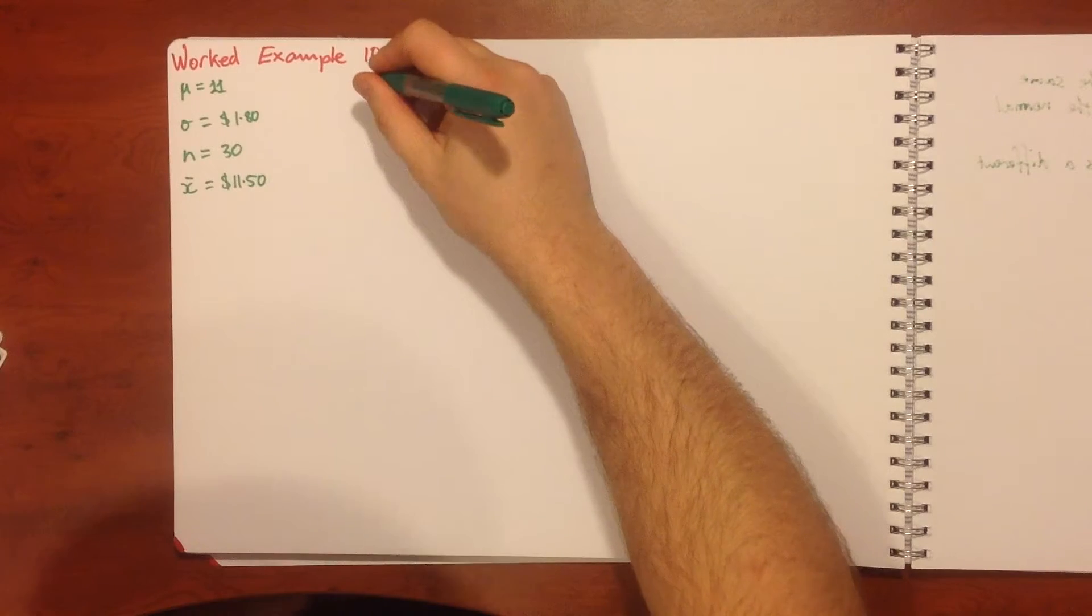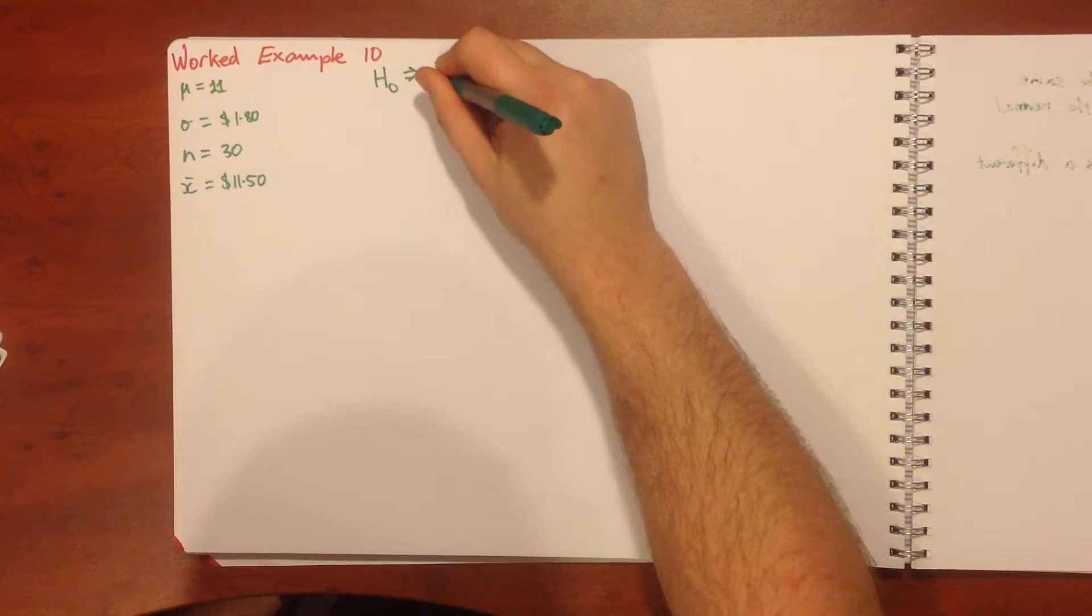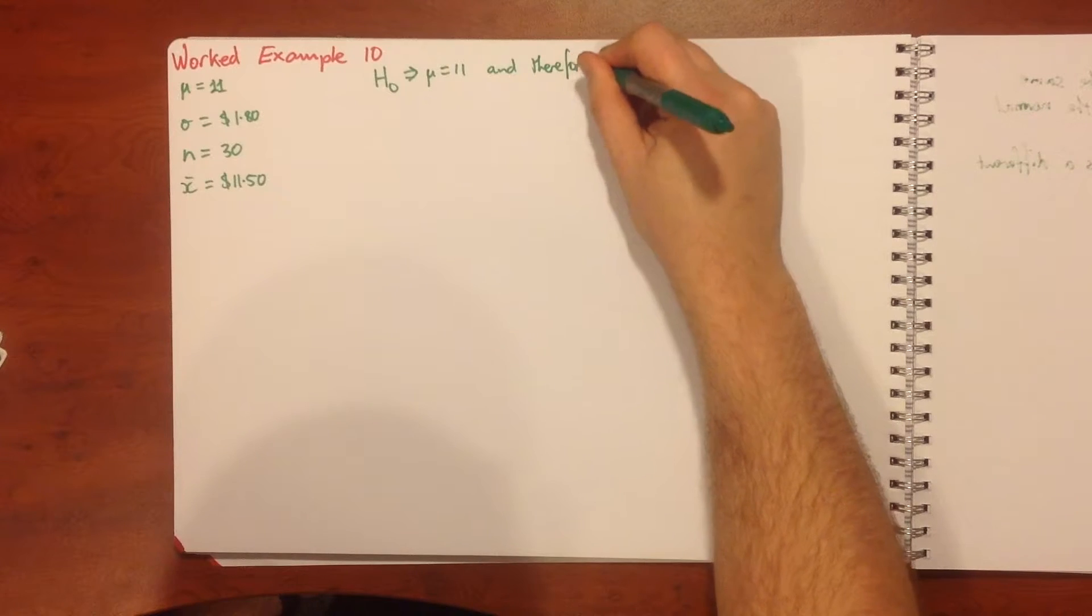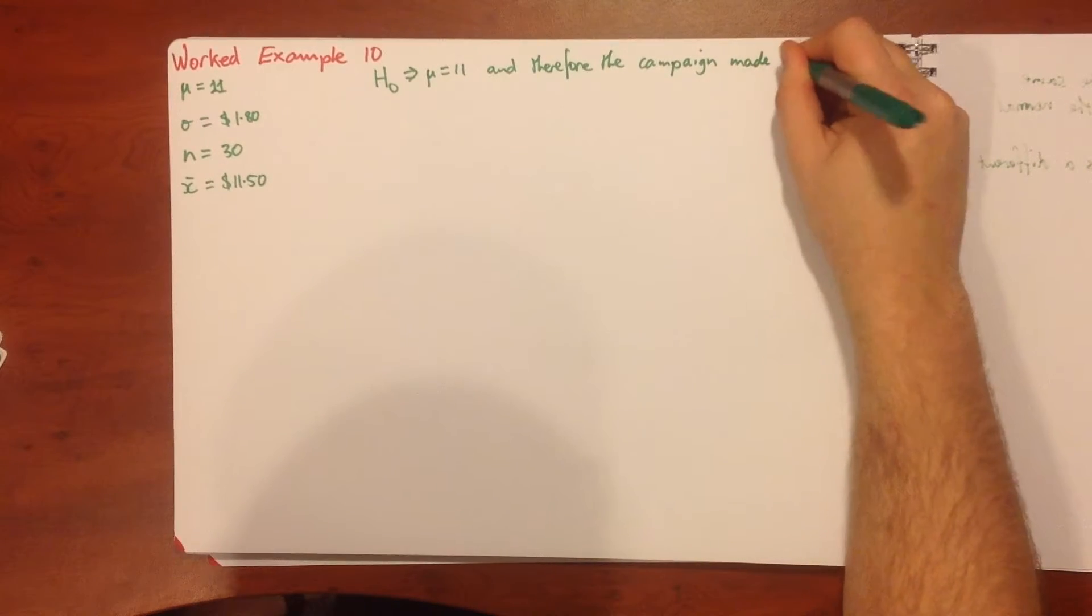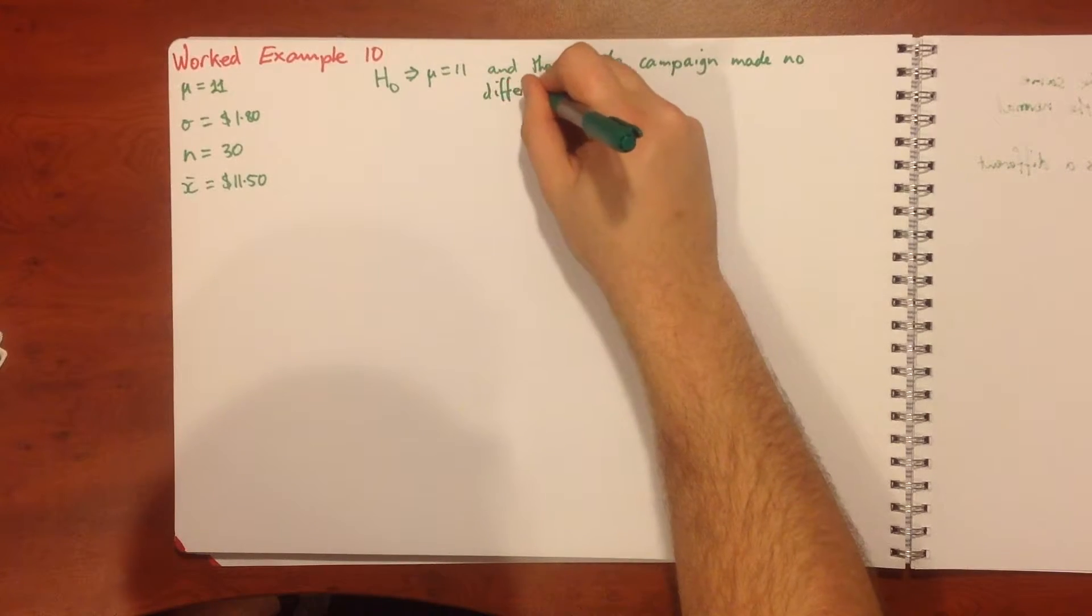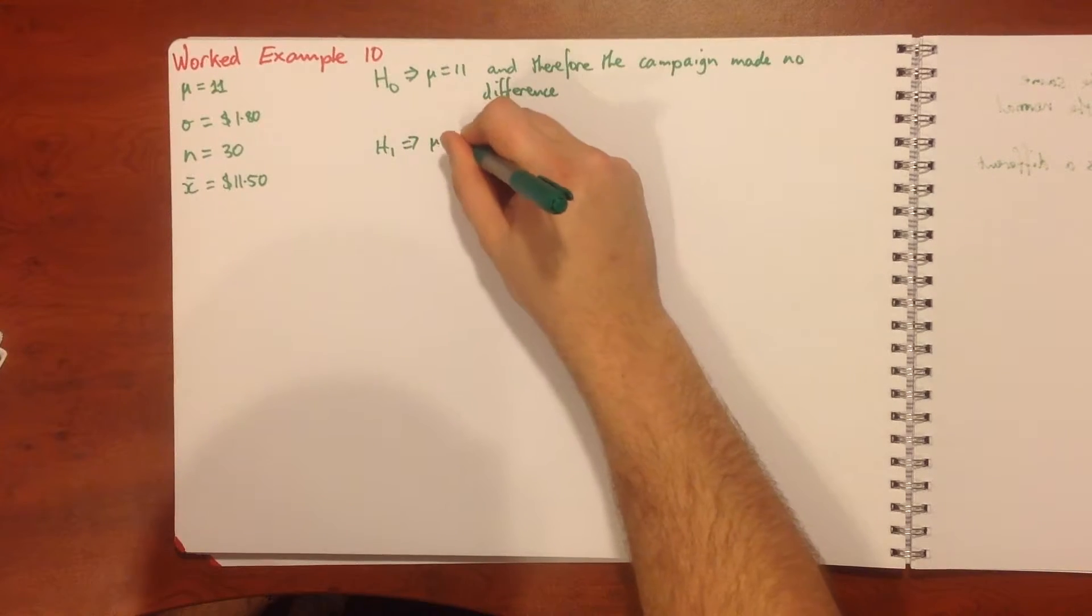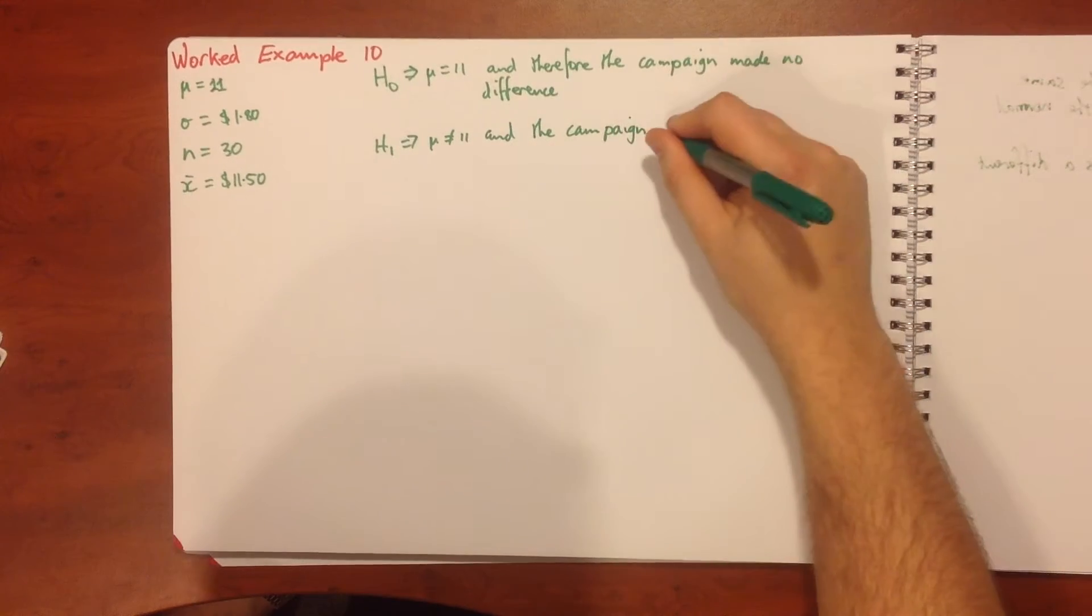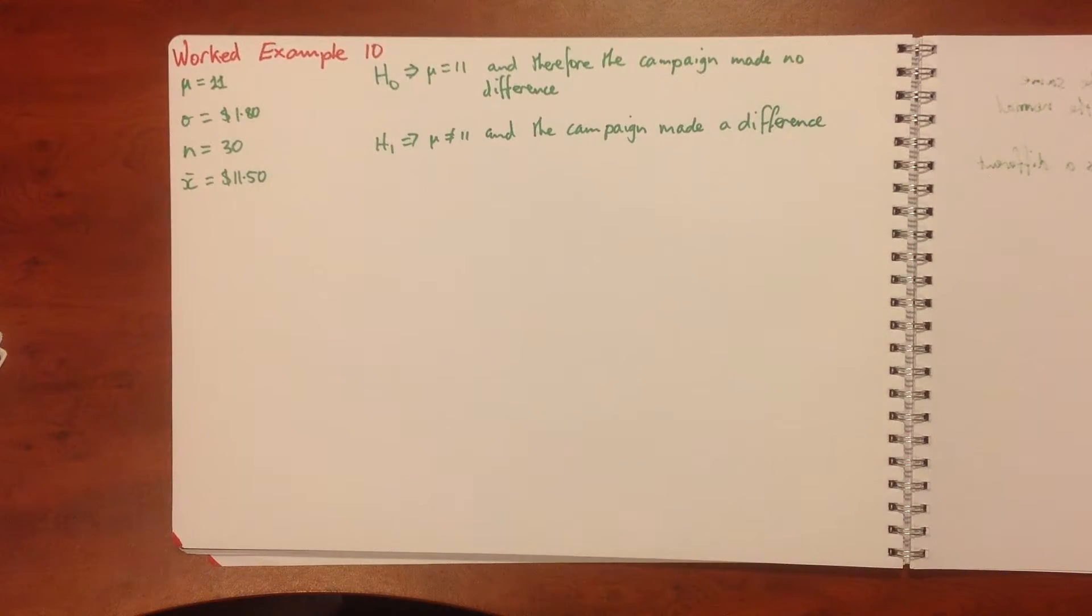We've got our information listed there. Now first of all we need to say what our null hypothesis is, and that is that our mean μ equals 11, and therefore the campaign made no difference.